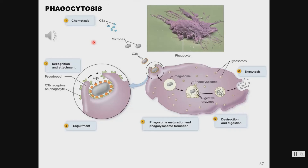To recap: complement proteins can act as chemoattractants and also as opsonins, helping phagocytic cells grab hold and engulf things. Once engulfed, material is brought in through endocytosis via a vesicle called the phagosome. The lysosomes contain digestive enzymes, and then the cell can release the waste products — that's what we mean by cellular debris.